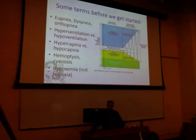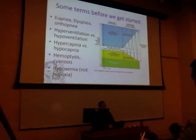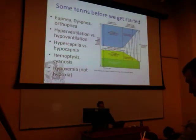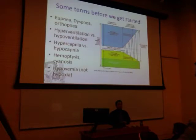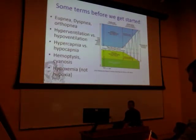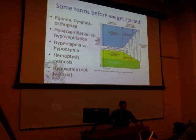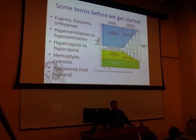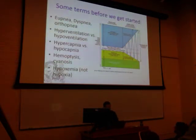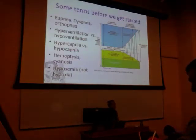Some terminology to get started: Eupnea, from the Greek 'eu' meaning well — it translates to well-breathing. Dyspnea is shortness of breath, often abbreviated SOB. If you're working in the emergency department and you see SOB in room four, that doesn't mean it's a difficult person — it means they probably have shortness of breath. Orthopnea is shortness of breath that occurs while lying down in a horizontal position, so we have different terminologies based upon position.